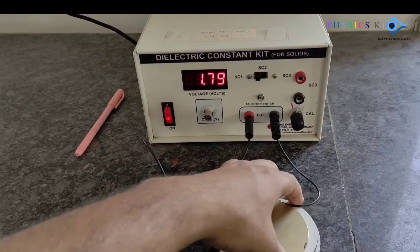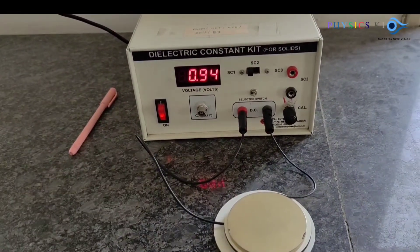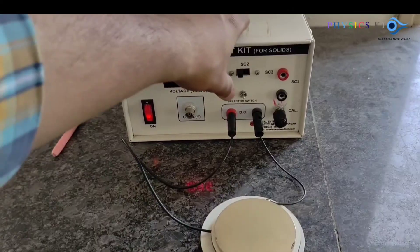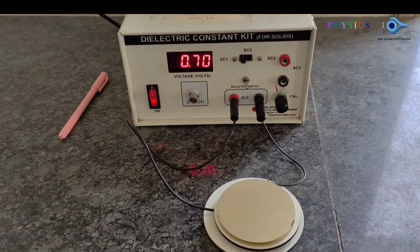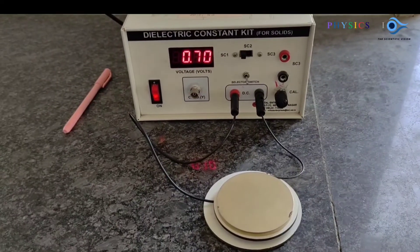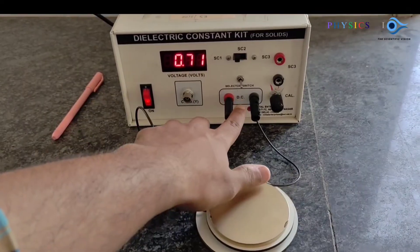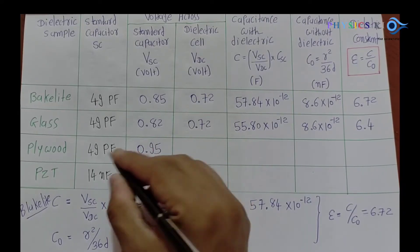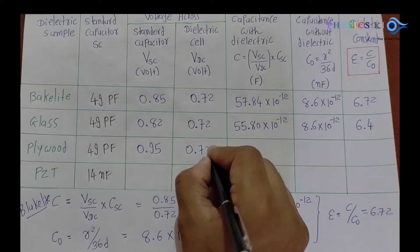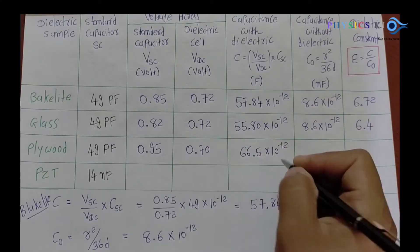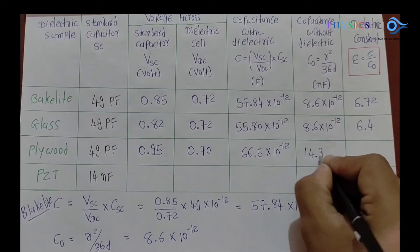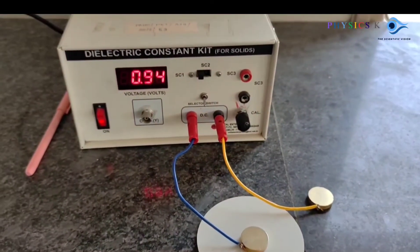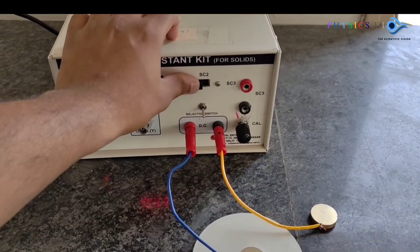Now using the plywood plate. With the switch in the upward direction, V_HC = 0.95. Switching to the downward direction gives V_DC = 0.70. Using the same formula, C = 66.5 × 10⁻¹² farads and C₀ = 14.3 × 10⁻¹² farads. Dividing gives the dielectric constant for plywood: ε = 5.75.